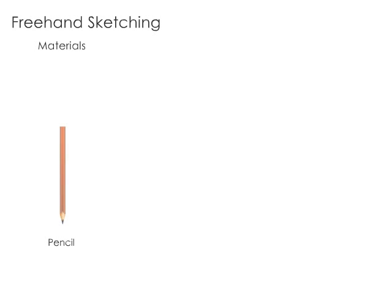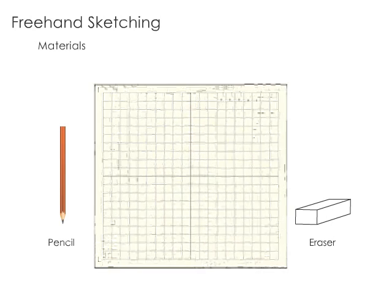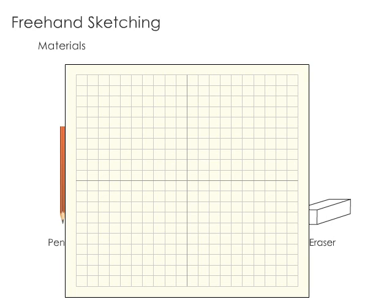These are pencil, paper and eraser. The cross section of grid paper is often used in sketching. The ruled lines help keep lines straight and the squares can be used to sketch approximately to scale.